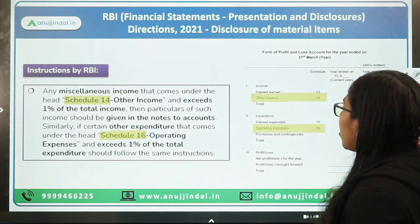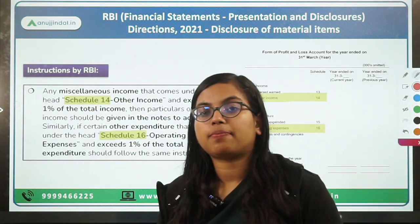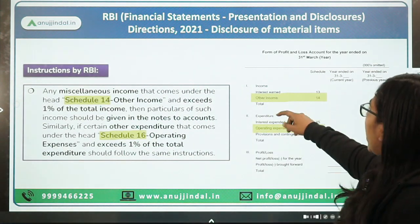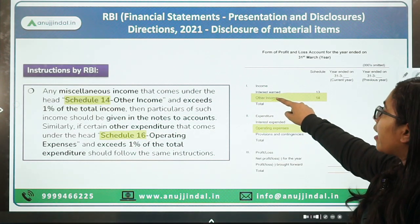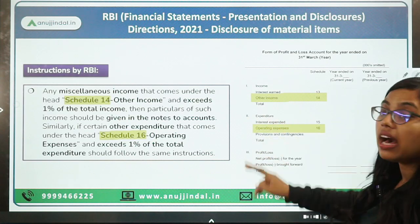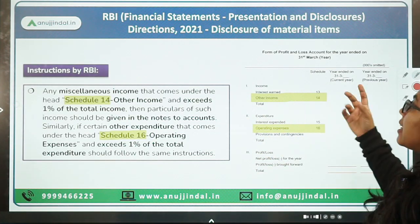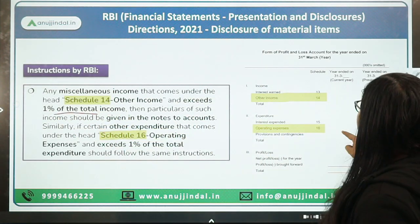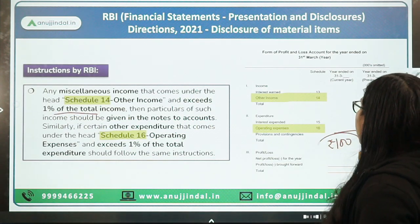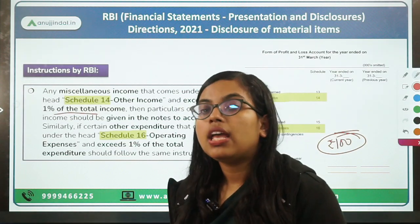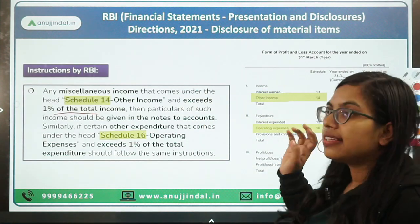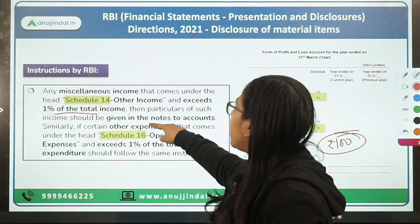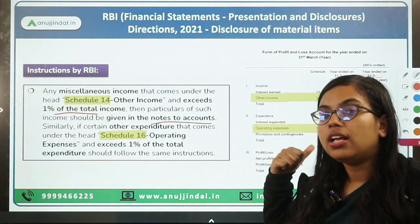RBI has notified that any miscellaneous income coming under other income — if that miscellaneous income exceeds 1% of the total income — then such miscellaneous income should be disclosed in the notes to account. For example, if 100 is the total income and certain miscellaneous income exceeds 1, then such income should be given in the notes to account in the financial statement.